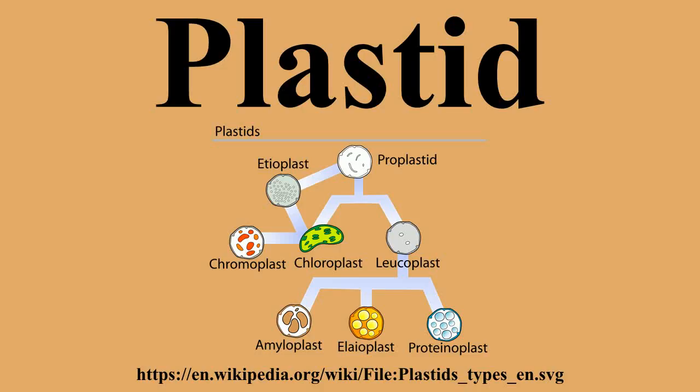Some dinoflagellates and sea slugs, in particular of the genus Elysia, take up algae as food and keep the plastid of the digested alga to profit from the photosynthesis. After a while, the plastids are also digested. This process is known as kleptoplasty, from the Greek kleptes, meaning thief.